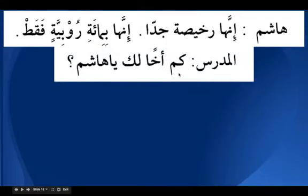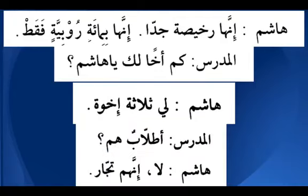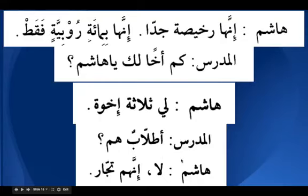The teacher asks: Wa kam akhan laka ya Hashim — how many brothers do you have? Kam requires a tamiz: singular, indefinite, mansoob — hence akhan. Hashim says: Li — I have — thalasatu ikhwatin. Thalasa is mubtada muakhar, mudaf, and ikhwatin is mudaf ilahi. Numbers three to ten always come as a combination of mudaf and mudaf ilahi. The teacher asks: A tulabun hum — are they students? Hashim replies: La, innahum tujjarun — indeed they are merchants, with tujjarun as the jamaa pattern for tajirun.